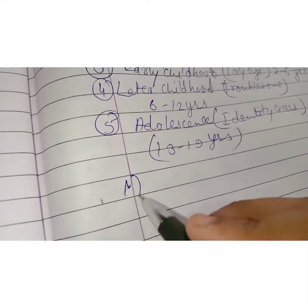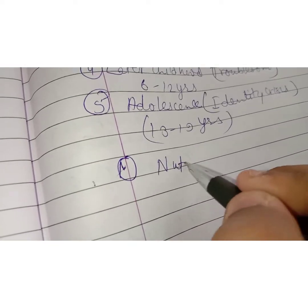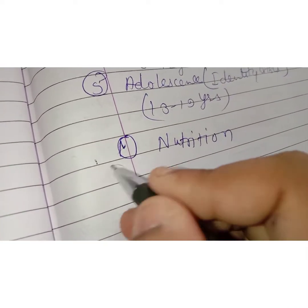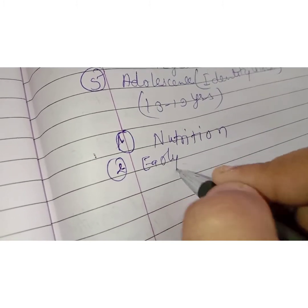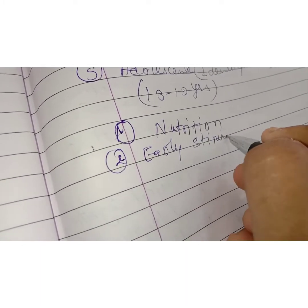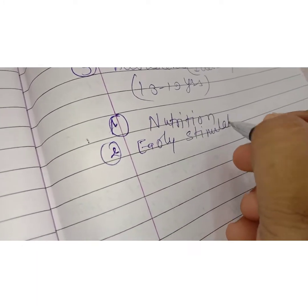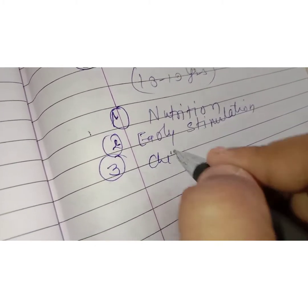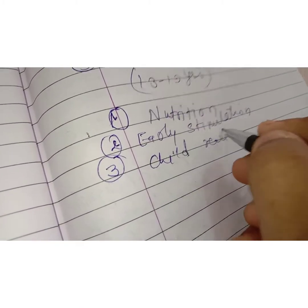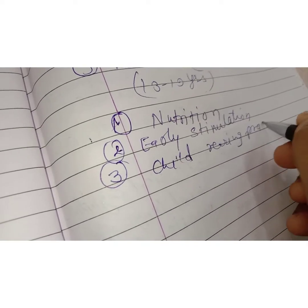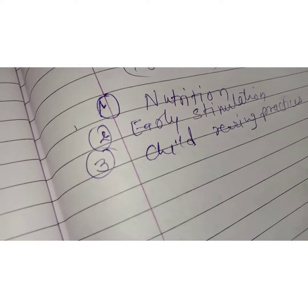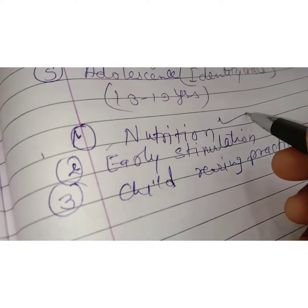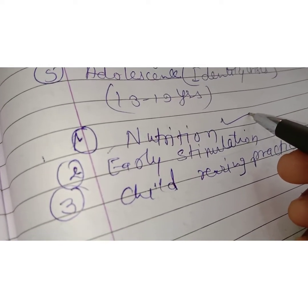Now let's look at the factors affecting development. The first factor is nutrition. The second is early stimulation. The third is child rearing practices. Nutrition must be available at the right time — when you need nutrition, you must receive complete nutrition.